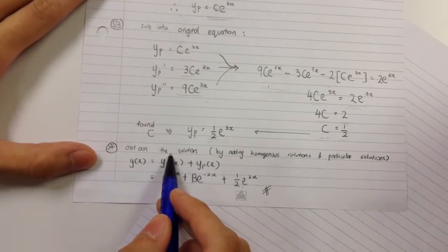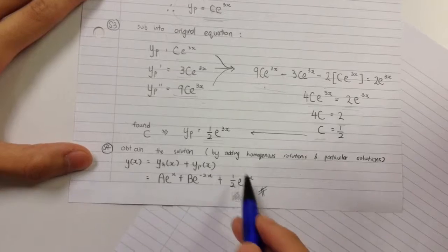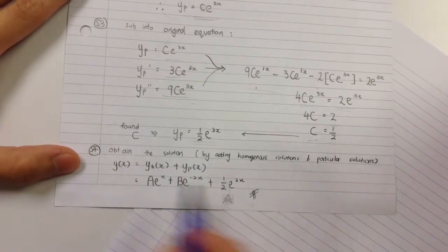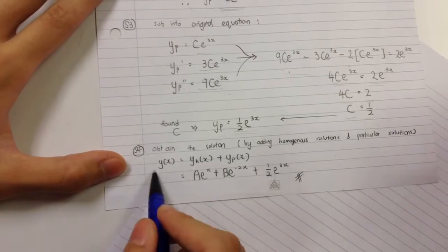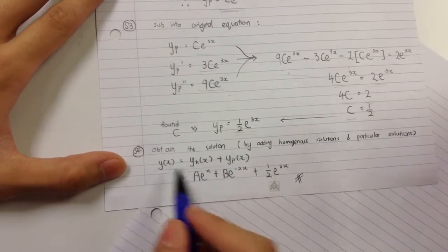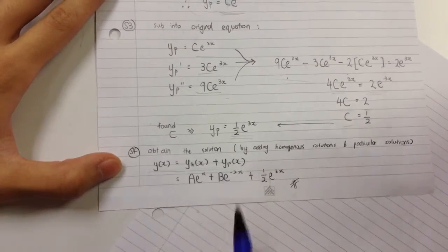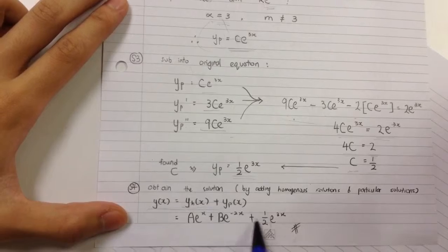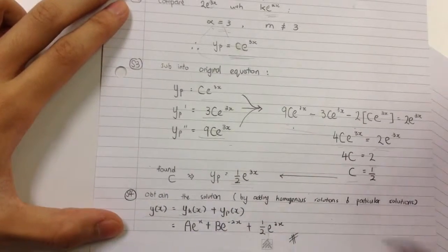I obtain the solution in the final step by adding the homogeneous equation and the particular solution. This is the formula. I substitute the Yh(x), which is the general solution, plus the particular solution, and that's my answer.